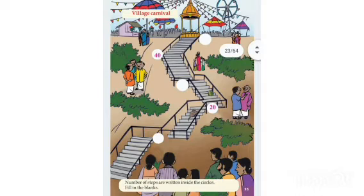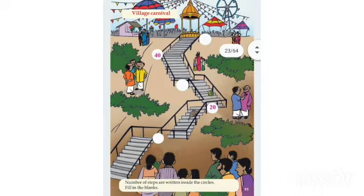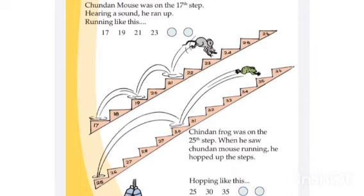The next circle is already given — it's 20. Without counting, we can move to the next blank: it should be 30. Then 40, and the last step should be 50. So we get the number of steps: 10, 20, 30, 40, and 50. Do you also get it?